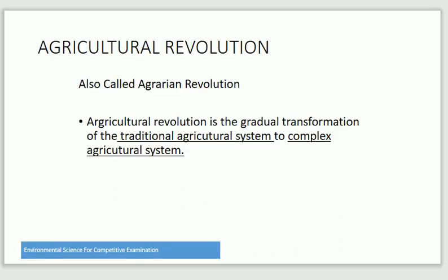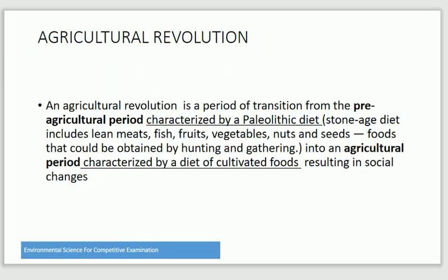Assalamu alaikum friends, aaj hum Agriculture Revolution ko parhte hain. Agriculture Revolution ko Agrarian Revolution bhi kaha jata hai. Agriculture Revolution is the gradual transformation of the traditional agriculture system to a complex agriculture system. It is a period of transition from the pre-agriculture period characterized by a paleolithic diet — including lean meats, fish, fruits, vegetables, nuts, and seeds obtained by hunting and gathering — into an agriculture period characterized by cultivated foods. Agriculture se pehle insan hunting karta tha, lekin agriculture aane ke baad insan cultivated foods ki taraf shift hua aur hunting par inhisar kam hota gaya.